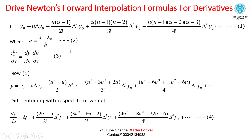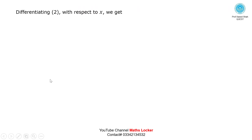Now differentiating equation 2 to find du/dx: since u = (x - x₀)/h, the derivative of x is 1 and x₀ is a constant, so du/dx = 1/h. This is equation number 5.